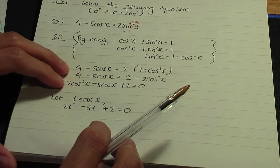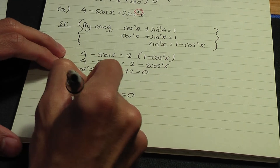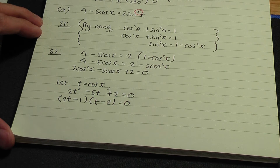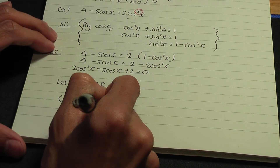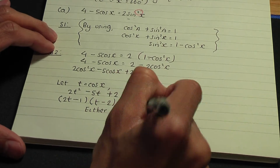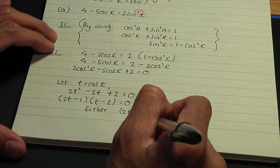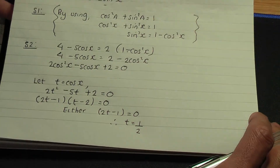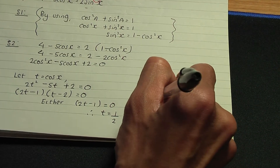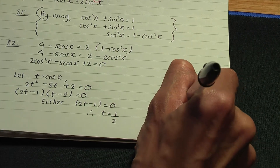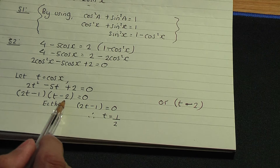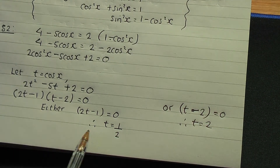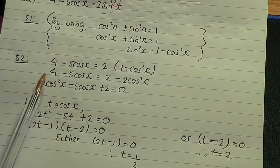I can factorise this quadratic. The two factors are (2t minus 1) and (t minus 2), equating to zero. Either 2t minus 1 equals zero, which gives the first value t equals one half; or t minus 2 equals zero, which gives the second value t equals 2. So we have two values: t equals one half, and t equals 2.